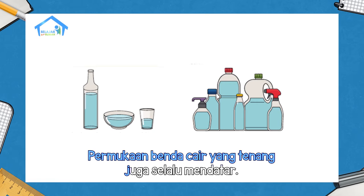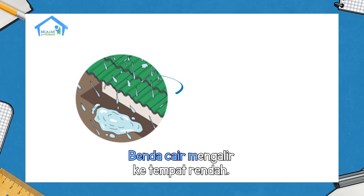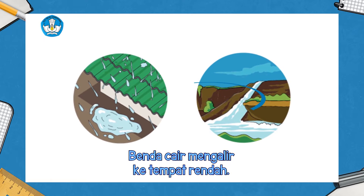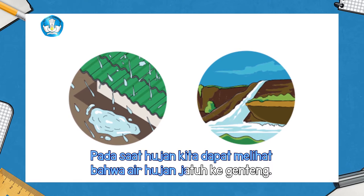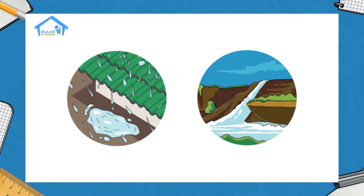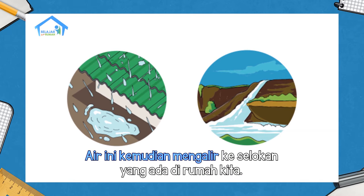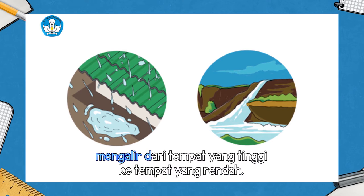Permukaan benda cair yang tenang juga selalu mendatar. Benda cair mengalir ke tempat rendah. Pada saat hujan, kita dapat melihat bahwa air hujan jatuh ke genteng, lalu air ini mengalir melalui talang dan jatuh ke tanah, kemudian mengalir ke selokan. Ketika kamu melihat sungai, kamu juga bisa melihat bahwa air sungai mengalir dari tempat yang tinggi ke tempat yang rendah.